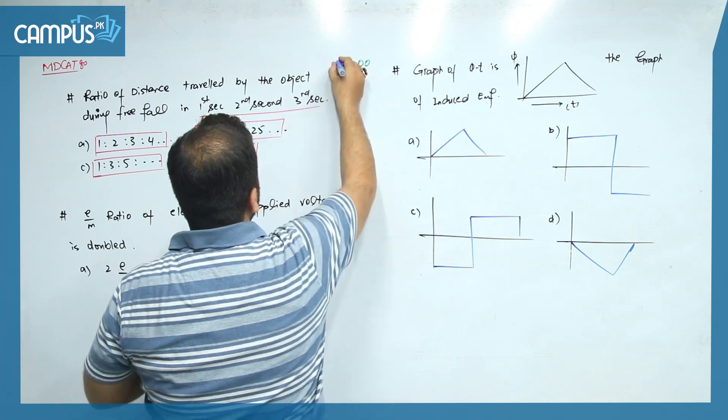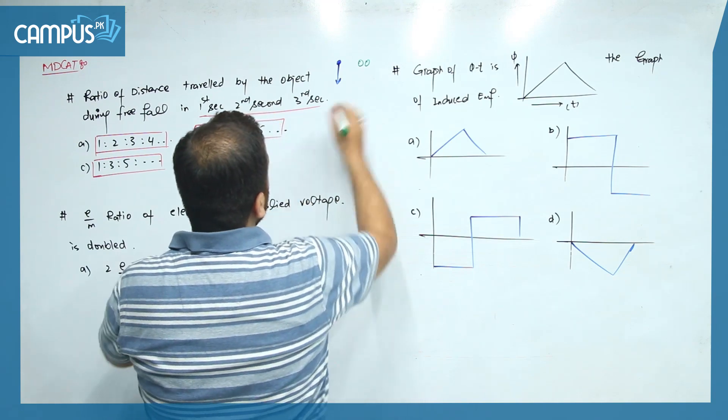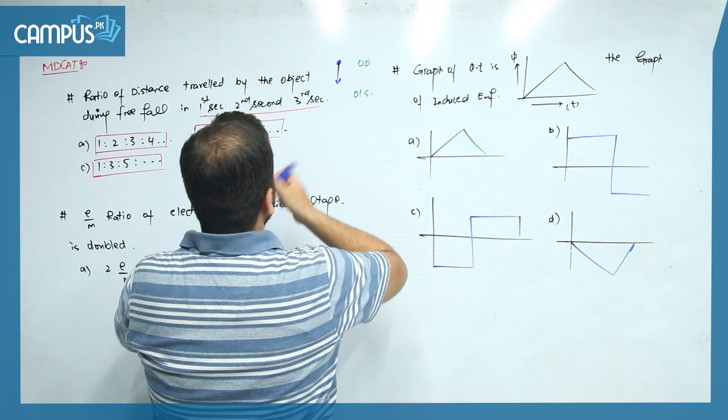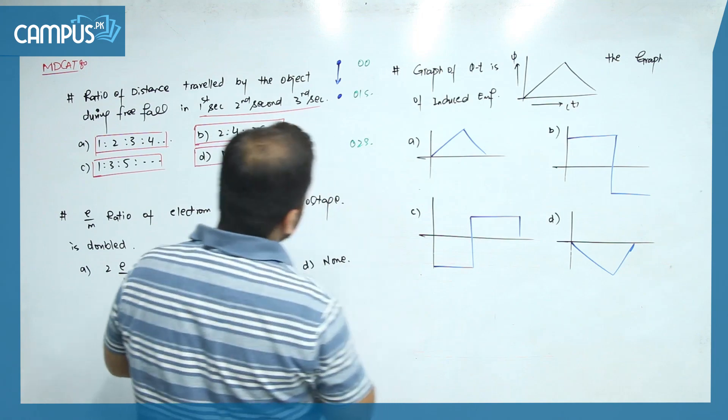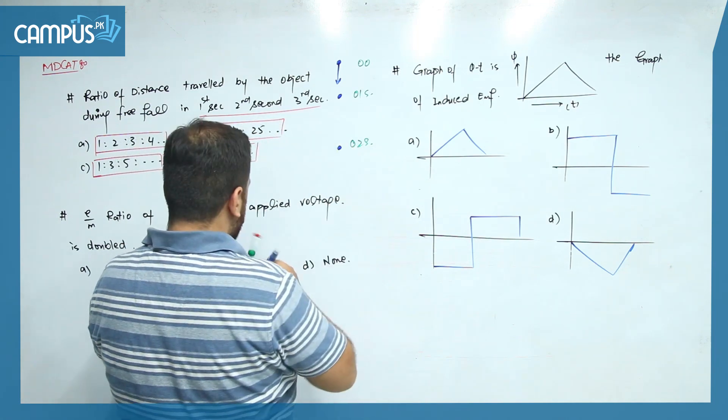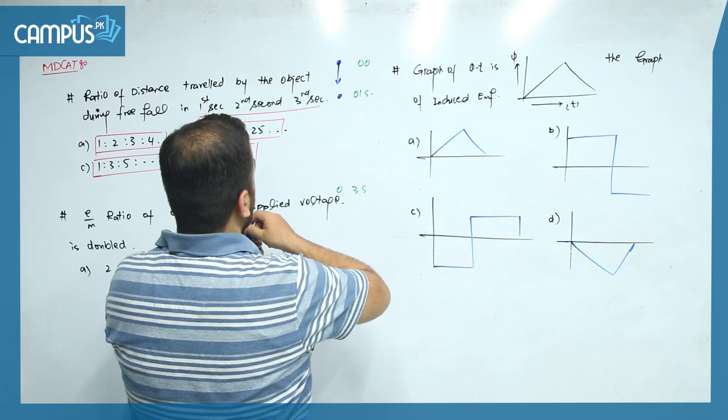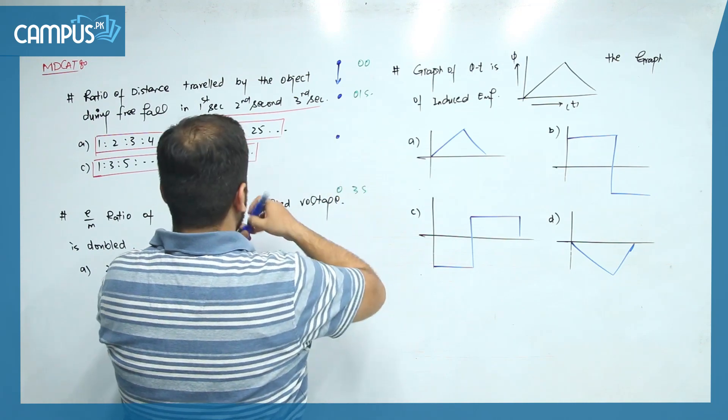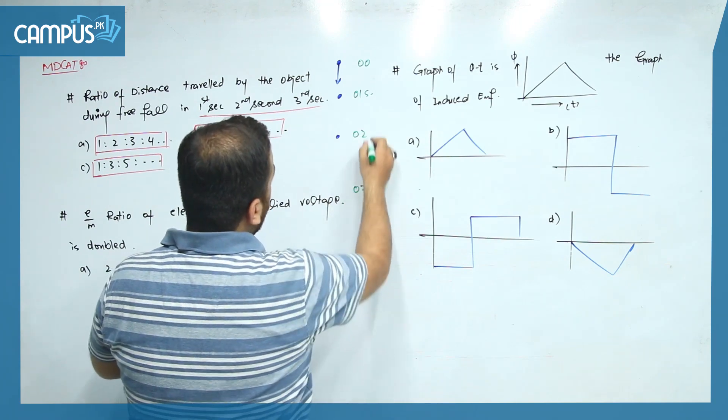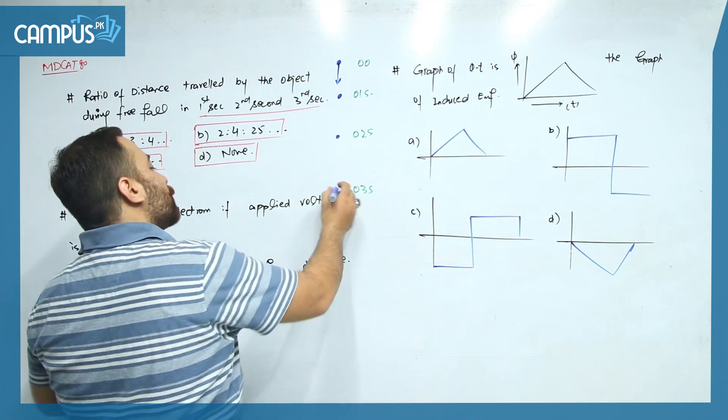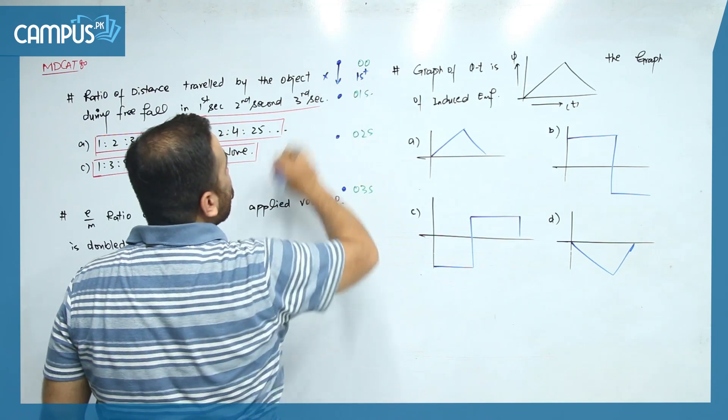You hold the stopwatch, it's at zero, and here is the object for free fall. You drop it and turn on the stopwatch. In the first second, when the stopwatch shows 01 second, the object was here. Then when the stopwatch shows 02 seconds, the ball was here. Similarly, when the stopwatch shows 03 seconds, the ball was here.